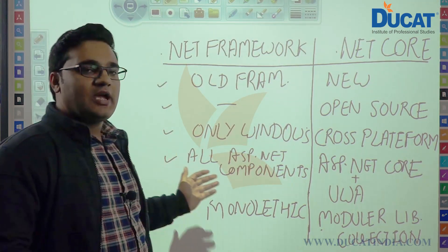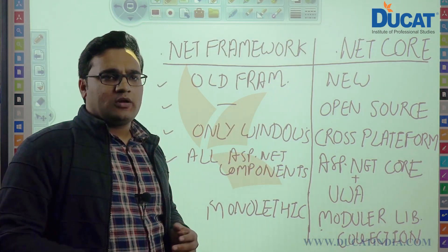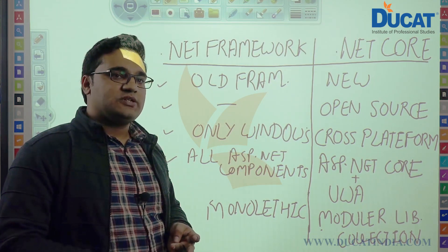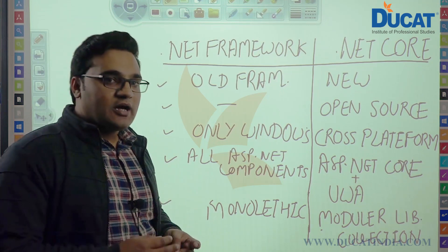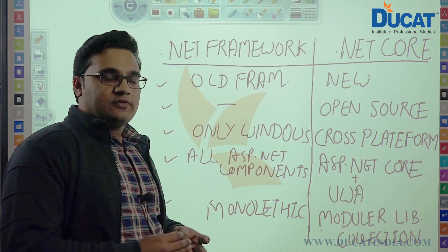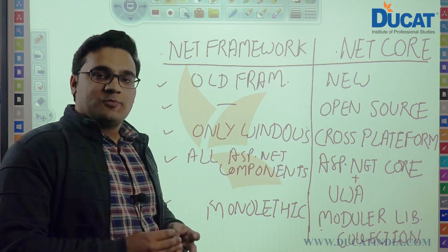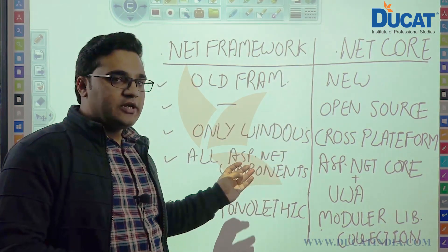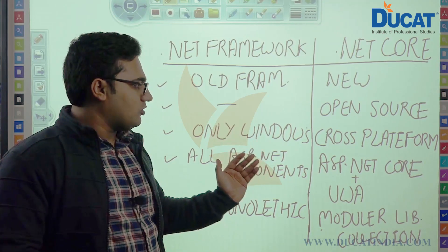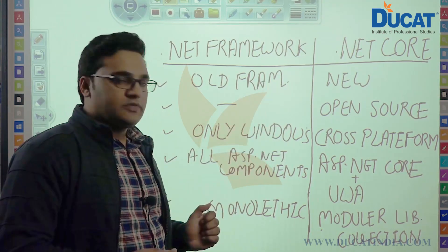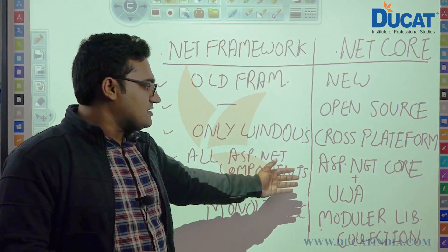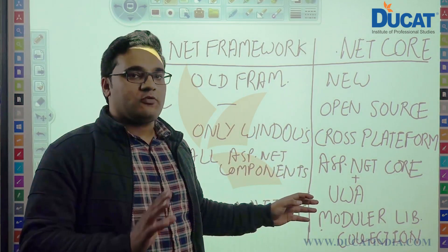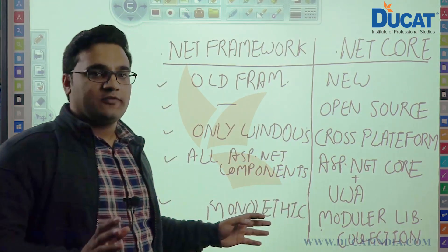In .NET Framework we have all ASP.NET components like ASP.NET Webforms, ASP.NET MVC, ASP.NET WebAPI, ASP.NET SignalR, WPF, and WCF. But in .NET Core, only two components are available: ASP.NET Core and Universal Windows apps. So we don't have ASP.NET Webforms in .NET Core. This is one more difference between these two.